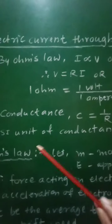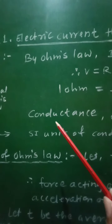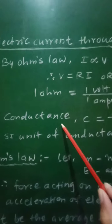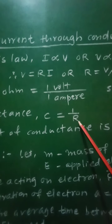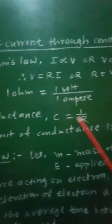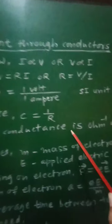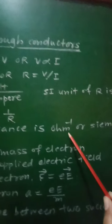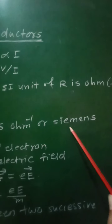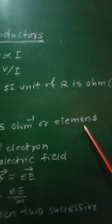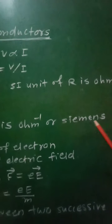The reciprocal of resistance is called conductance: C = 1 / R. The SI unit of conductance is Ohm-inverse, also called Siemens.